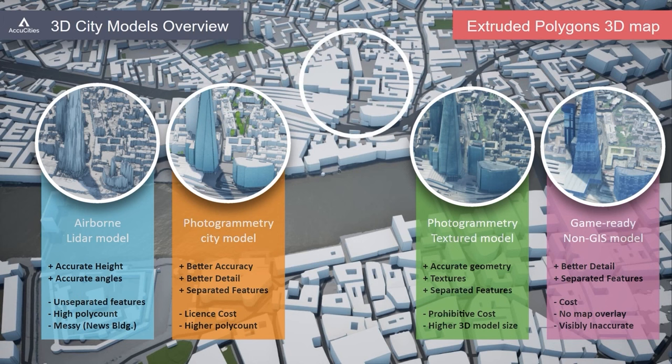The LiDAR model has the Shard at accurate height and dimensions, but look at what happened to the News building — either under construction or some weird refraction caused this feature to be visually clearly incorrect. The photogrammetry city model has the building with clean geometry and upgraded facades. The textured model realistically shows the detailing on all the buildings from London Bridge Station, the Shard, the News building and The Place. The gaming model has the Shard at a fairly high level of detail, but somehow inaccurate from this distance.